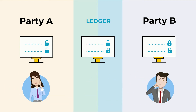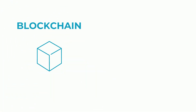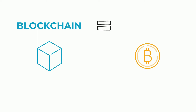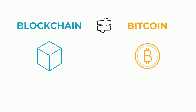Both parties see each and every transaction — that's blockchain. Some people misunderstand that blockchain is the same as cryptocurrency like Bitcoin. While Bitcoin uses blockchain as a means to transparently record payments, blockchain is not Bitcoin. Blockchain powers Bitcoin.